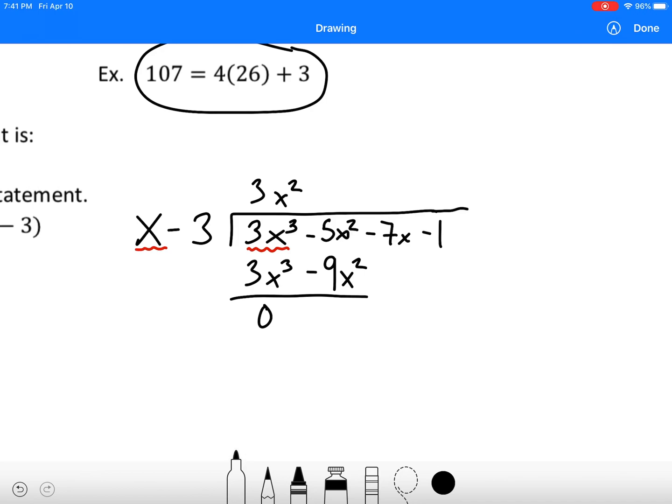I'm going to have 3x³ divided by x and I'm going to get 3x². Then I'm going to multiply through. 3x² times x is 3x³. 3x² times negative 3 is negative 9x². Now we're subtracting. The first two, 3x³ and 3x³ are just 0. The second one, negative 5 minus negative 9 is negative 5 plus 9. So we get 4x². It's a positive. Then we're going to bring down our negative 7x.